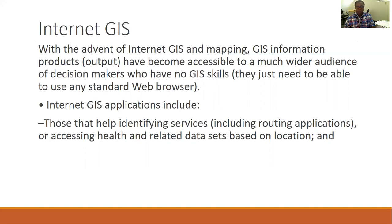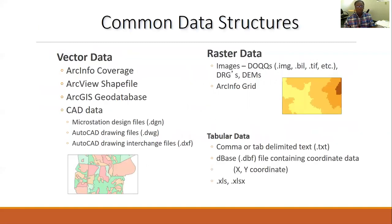Internet GIS includes routing applications, assessing health and related data sets based on location, and many more. With data, there are two main types of GIS data: vector data and raster data. Vector data are the type that can be discretely identified on the map — in other words, points, lines, and polygons. Raster data sets are images such as satellite images, and most of the time are continuous. We also have tables, which can be converted to a map if they have the correct geographic units.